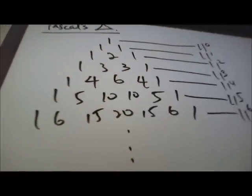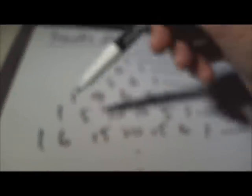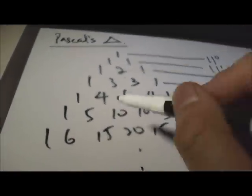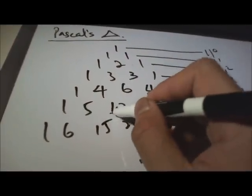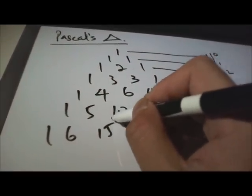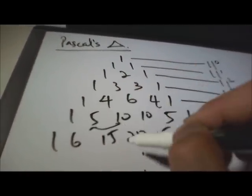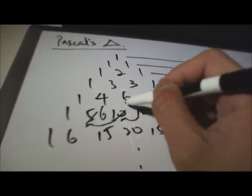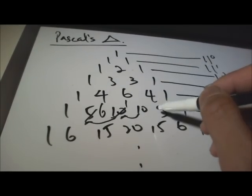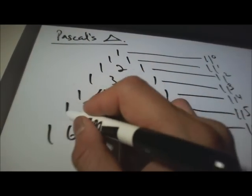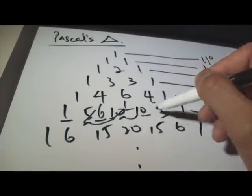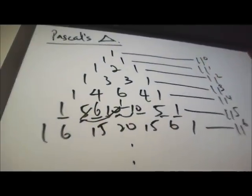But of course you have 10 here — you cannot say 11 power 5 is 15101051, that's wrong. The tens here should carry over to the other side. So this becomes 6, and this carry over makes this become 1.